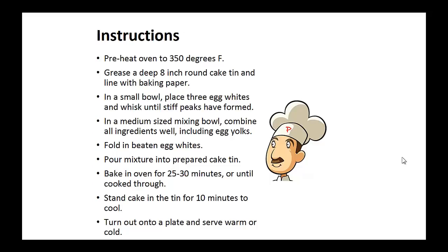Instructions. Preheat your oven to 350 degrees. Grease a deep eight inch round cake tin and line it with baking paper. In a small bowl, place three egg whites and whisk until stiff peaks have formed. In a medium sized mixing bowl, combine all ingredients well, including the egg yolks.